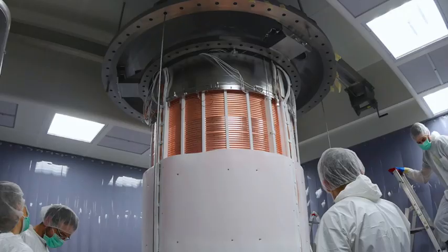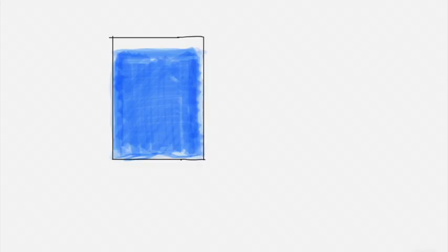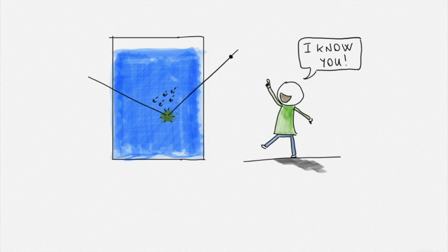The Xenon-1-ton detector was filled with 3.2 tons of ultra-pure liquefied xenon, two tons of which served as a target for particle interactions. When a particle crosses the target, it can generate tiny signals of light and free electrons from xenon atoms.